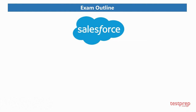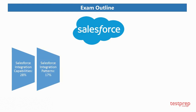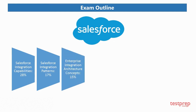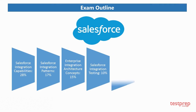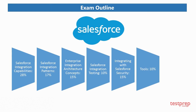Exam outline: 1. Salesforce integration capabilities — 28% weightage. 2. Salesforce integration patterns — 17% weightage. 3. Enterprise integration architecture concepts — 15% weightage. 4. Salesforce integration testing — 10% weightage. 5. Integrating with Salesforce security — 15% weightage. 6. Tools — 10% weightage. 7. Monitoring — 5% weightage.